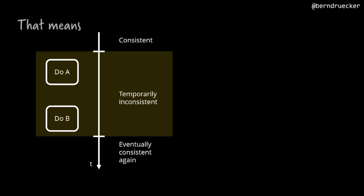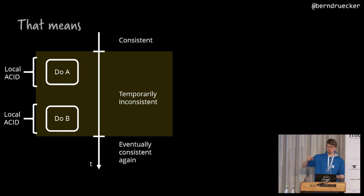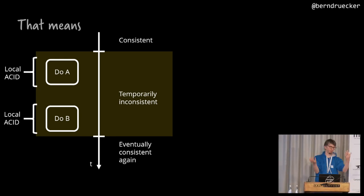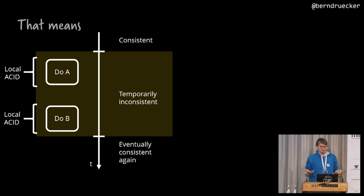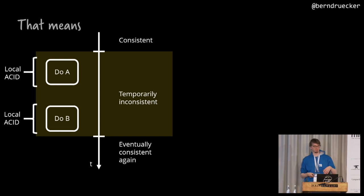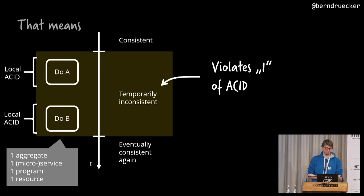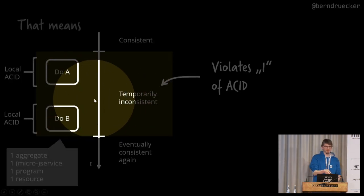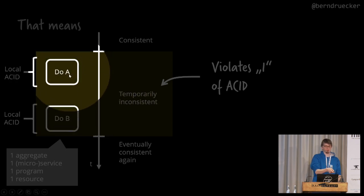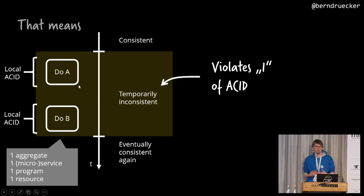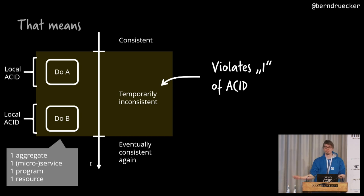If you do A and B in an all-or-nothing semantics, it's not completely ACID — it's locally ACID. Service A does something in an ACID way with a local transaction on a database, and service B does the same, but in between you have a temporally inconsistent state. Some other service could come along and read data from A after it's committed but before B has completed — you have no idea that B will happen later. Interestingly, this doesn't violate the isolation property of ACID in a strict sense.